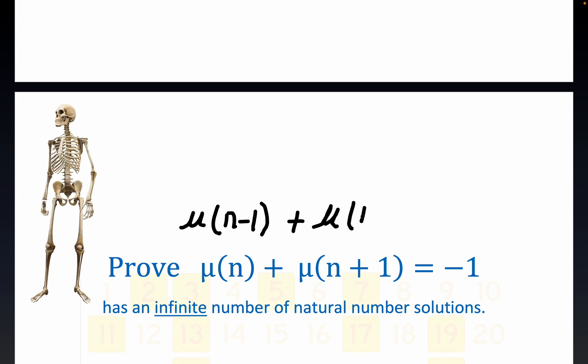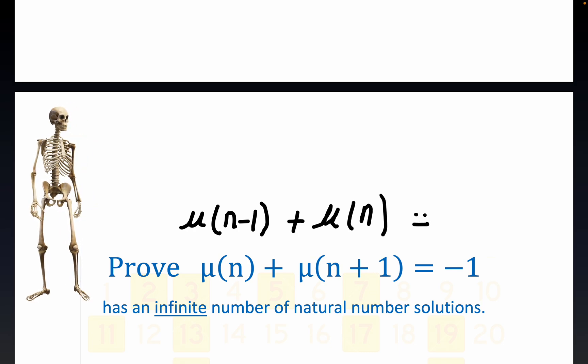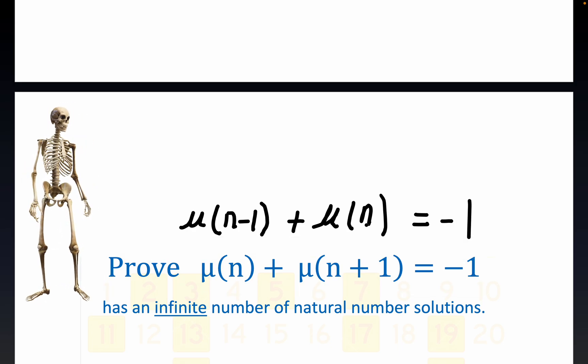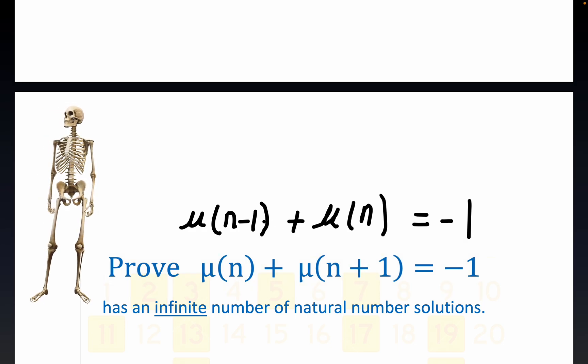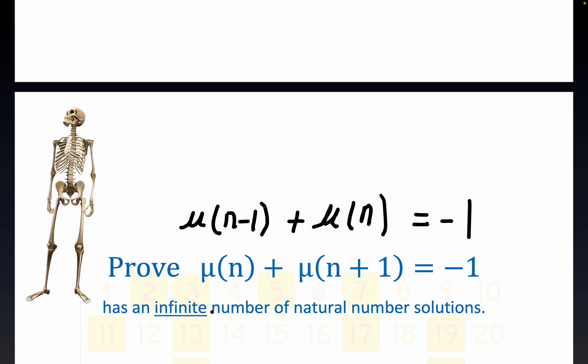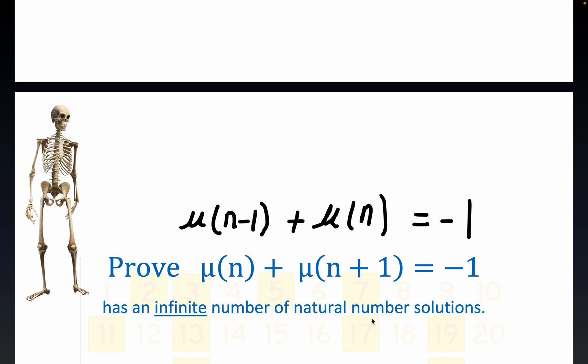If we can prove either this statement or this statement, then we've done our job. Because n minus 1 and n are consecutive natural numbers, just like n and n plus 1 are consecutive natural numbers. The notation is a little bit more convenient to think of this proof both ways, at least the way I did it.